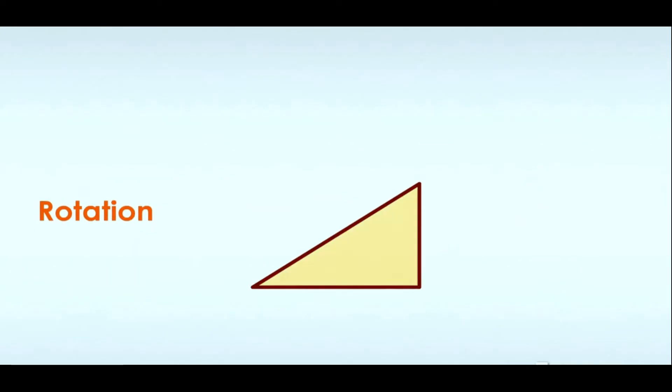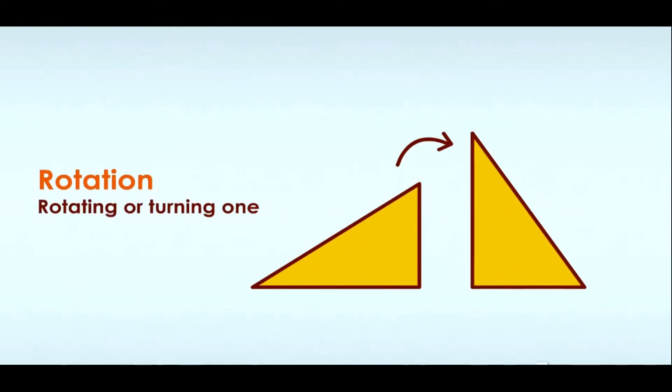The scalene triangle on the left and the scalene triangle on the right are actually similar, but the one on the right has been rotated to stand on its shortest side. To see if the two triangles are similar, you first have to get them both in the same direction or orientation. You do this by rotating or turning one shape to align with the other. Such a transformation is called a rotation.